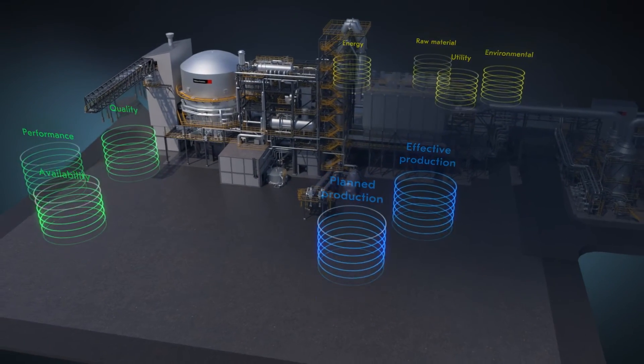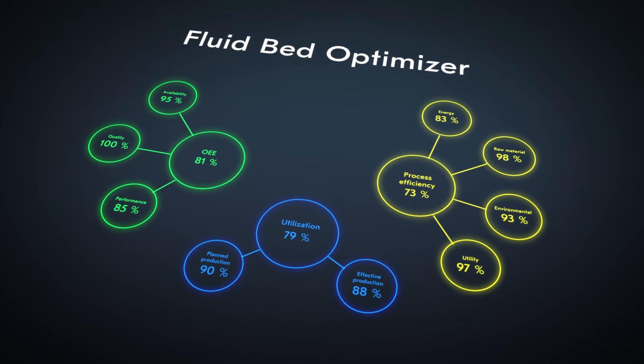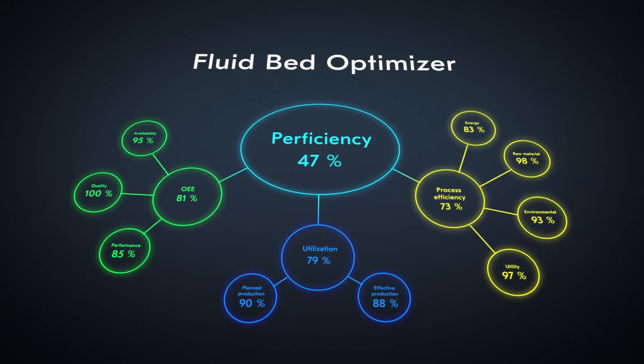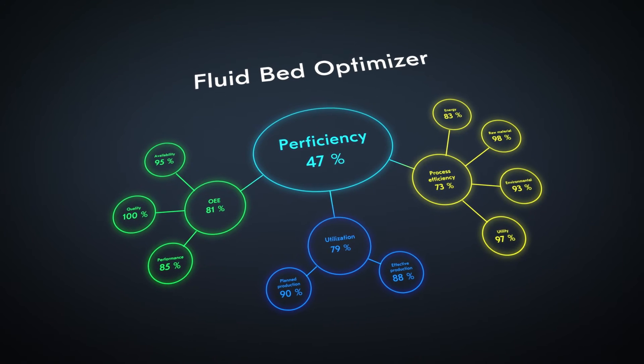The Metso Outotec Fluid Bed Optimizer combines all relevant plant data for optimal control and increased proficiency. The Optimizer enables plant bottlenecks to be accurately analyzed and used for the next plant improvement project.